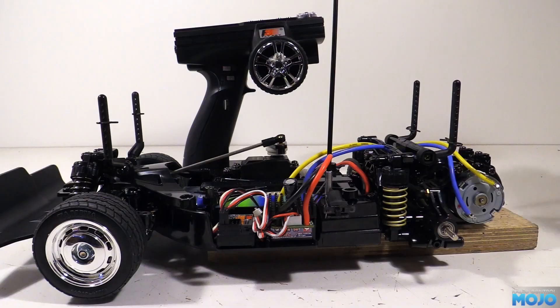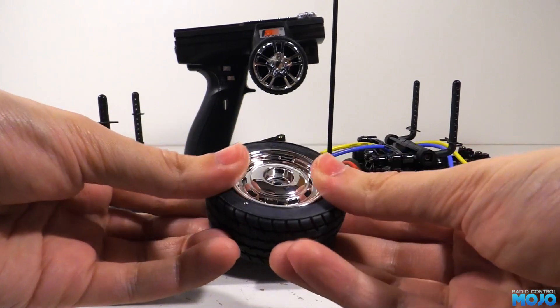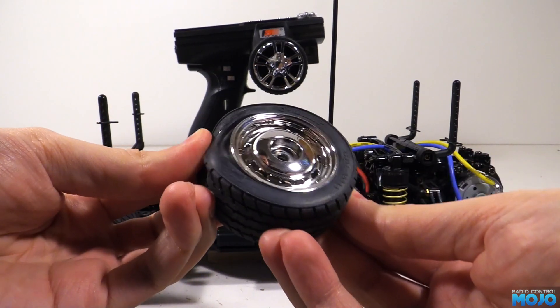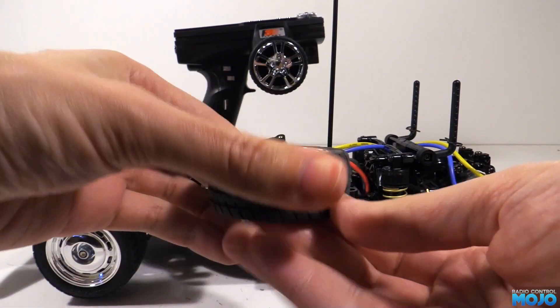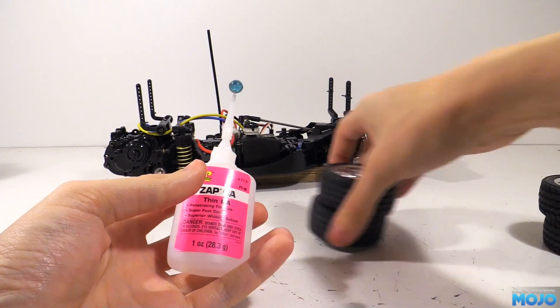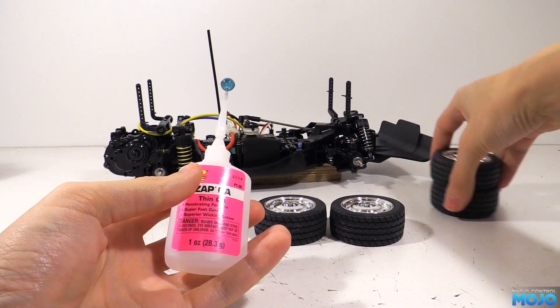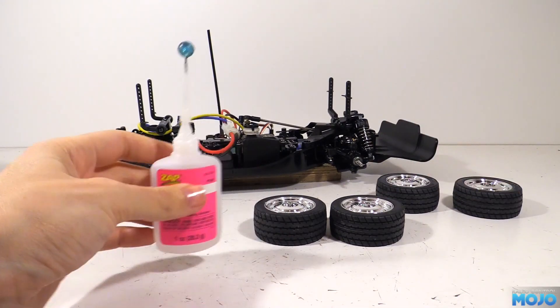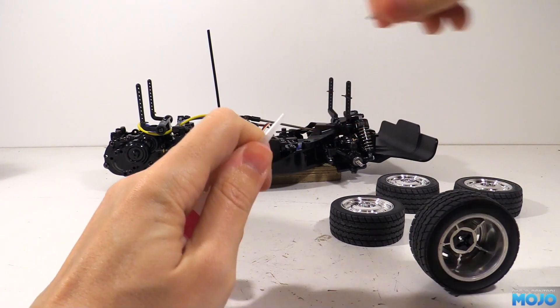We've got one more thing to do before we can actually run the truck. We need to glue the tyres. You can get proper tyre glues, but I much prefer using thin cyano. It's the same stuff, more or less, just thinner. You have to be extremely careful with it. It's like water. It's amazing how easily it finds skin if you give it the opportunity.